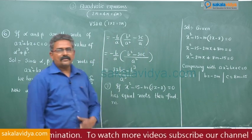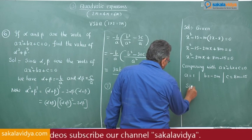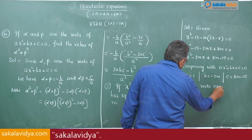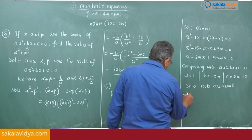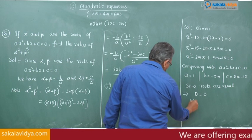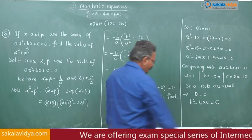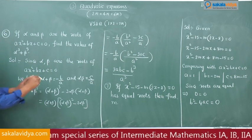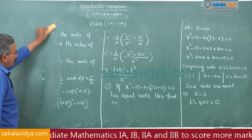Since roots are equal, that implies D is equal to 0, meaning b squared minus 4ac is equal to 0. Now substitute the respective values.